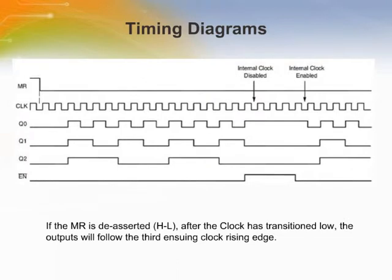This is the continuation of the previous slide. In this slide, we show MR in de-asserted mode, or high to low. After the clock has transitioned low, the outputs will follow the third ensuing clock rising edge.